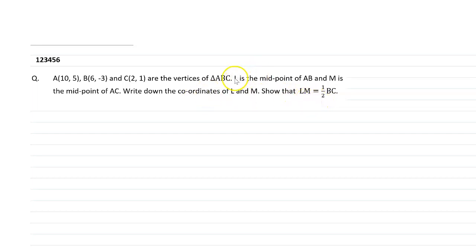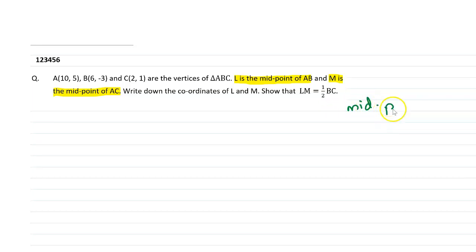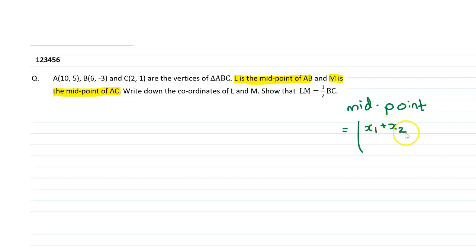We are given two midpoints: L is the midpoint of AB and M is the midpoint of AC. In coordinate geometry, we have the midpoint formula. If we are given two points A(X1, Y1) and B(X2, Y2), then the midpoint of AB is given as (X1 plus X2)/2 comma (Y1 plus Y2)/2.